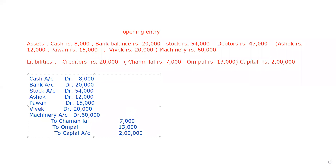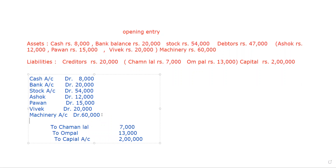As you have seen in the previous entries, whenever you do any entry, the total of the debit and credit must always be equal to each other. But if we calculate, the debit and credit are not equal here. The total of the assets (debit side) will be Rs. 1,89,000, while the liabilities plus capital total is Rs. 2,20,000. So to balance the entry, the balancing figure is to be shown as the goodwill of the business — goodwill account debit, that will be the balancing figure of Rs. 31,000.